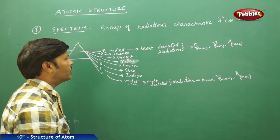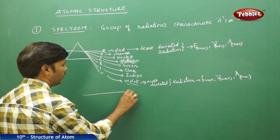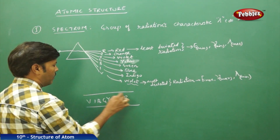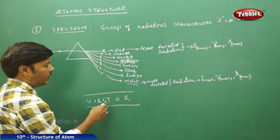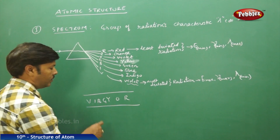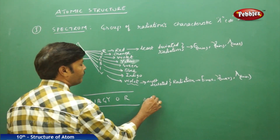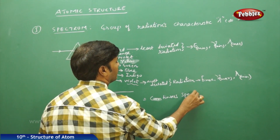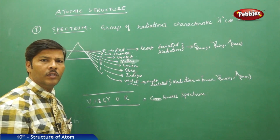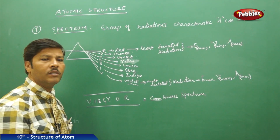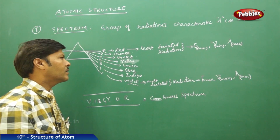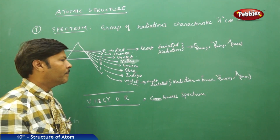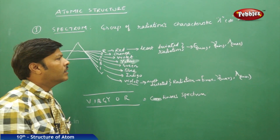Based on this discussion, if you take the continuous colors from violet to red — VIBGYOR — this continuous form of colors starting from violet to red gives you a continuous spectrum. A continuous spectrum is a spectrum made up of different radiations starting from violet to red, where violet has maximum energy, maximum frequency, and minimum wavelength, and red has minimum energy, minimum frequency, and maximum wavelength.